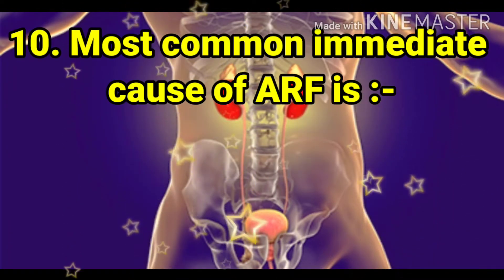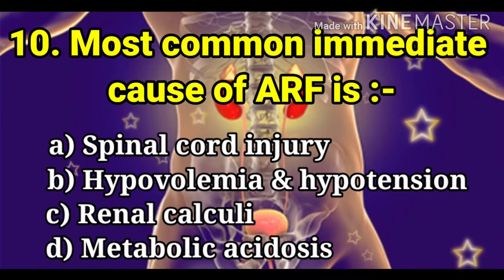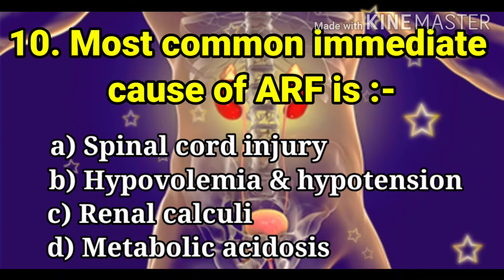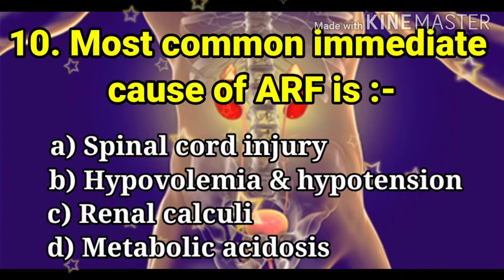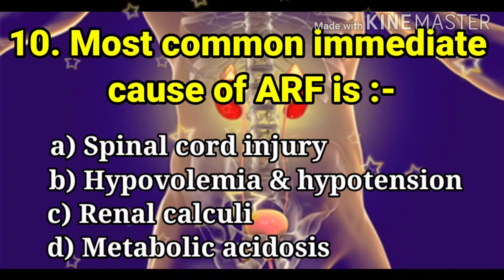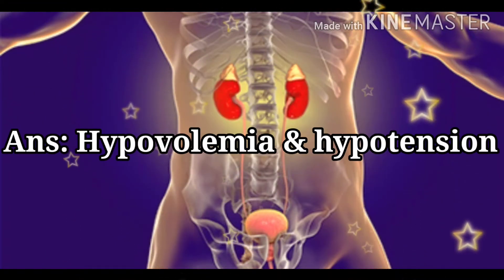Next question: the most common immediate cause of ARF (acute renal failure). The options are spinal cord injury, hypovolemia and hypotension, renal calculi, and metabolic acidosis. The answer is hypovolemia and hypotension.